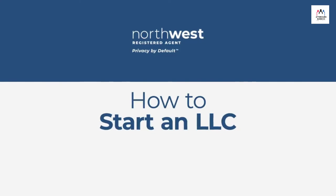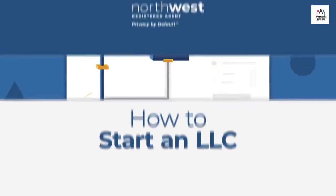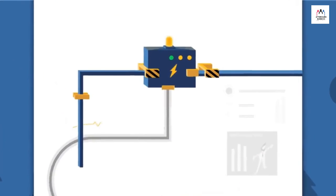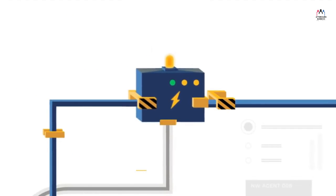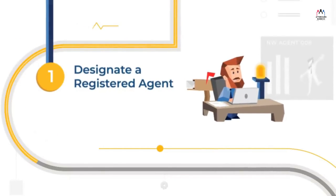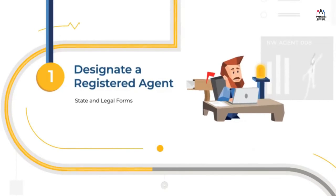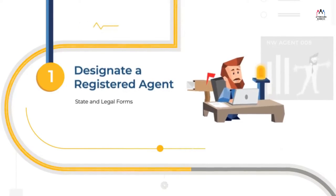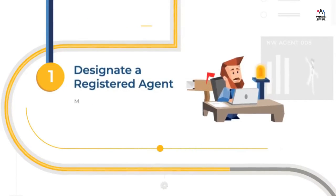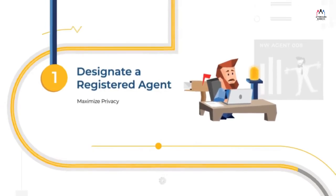Starting an LLC? Let us show you how to do it the right way. The whole point of an LLC is to separate you from your business — that's what protects your finances and privacy. Start by appointing a registered agent, your LLC's official point of contact. Hiring a registered agent is a smart and affordable method to maximize privacy.